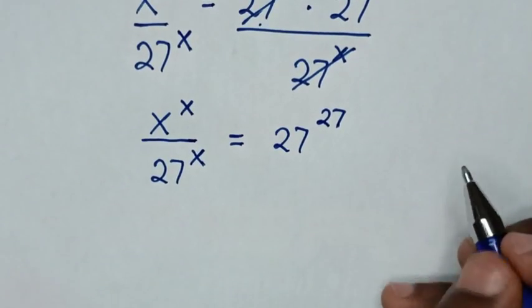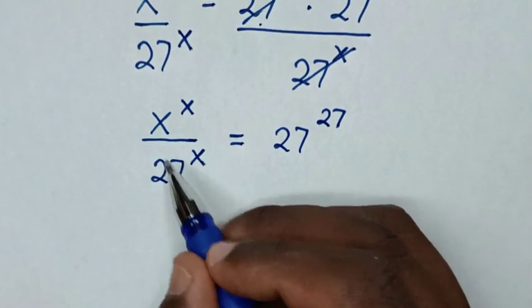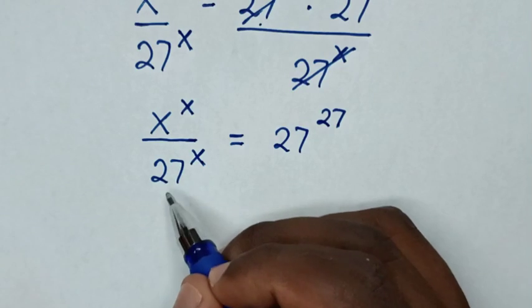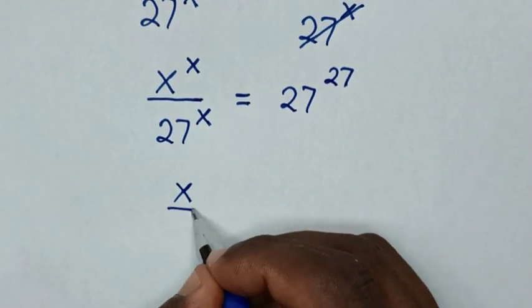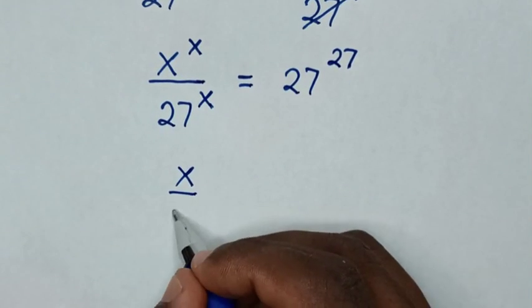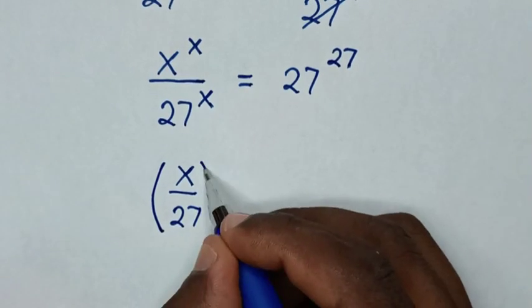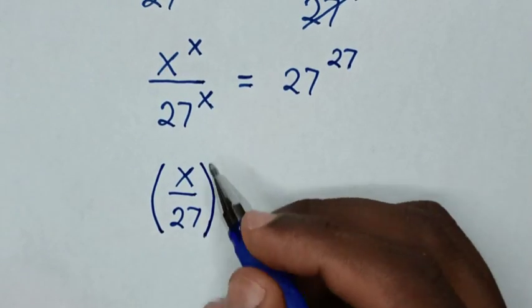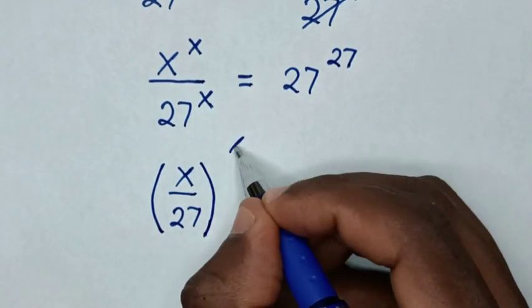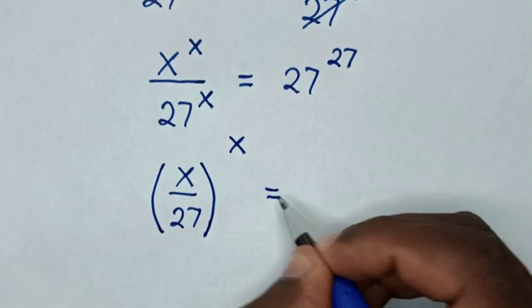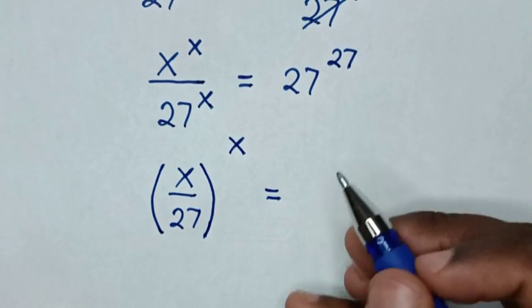In the next step, the power of x is common, so it will be x over 27, bracket, to the common power of x, which is equal to 27 power of 27.